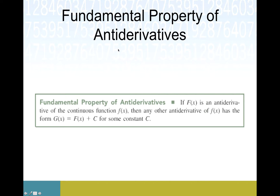Here is what we're going to refer to as the fundamental property of anti-derivatives — because we just need to make everything sound as awesome as possible. This fundamental property says if F is an anti-derivative — and here's that indefinite article again — is an anti-derivative of a continuous function, then any other anti-derivative has this form. We do want continuity here; some funky things can happen with discontinuous functions, but most of the stuff we deal with can be drawn without picking up our pencil, so we're usually in safe territory.